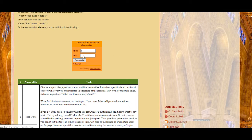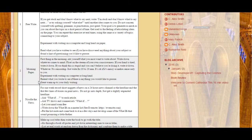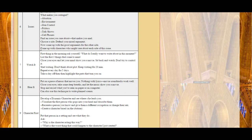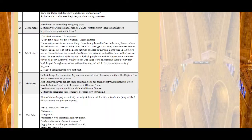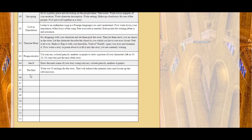Right now I have 45 exercises that you can do listed on this table. You put in 45 and it will generate a number for you — the number is seven right now. Coming down to seven, we get: first thing in the morning, ask yourself what you really want to write about in this moment, list three things that come to mind, close your eyes and let your mind show you a movie, sit back and watch, don't try to control it, start writing, don't think about the plot, keep writing for 20 minutes, repeat every day for five days, take a day off, and then highlight the parts that turn you on. I have several different exercises like that, plus some blank exercises that you can fill in if you come up with unique and interesting ways to contact the subconscious that work for you.